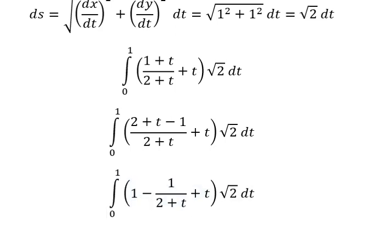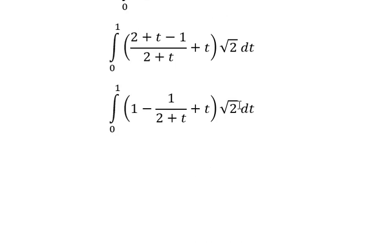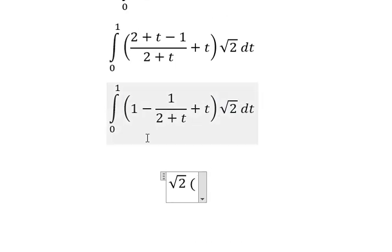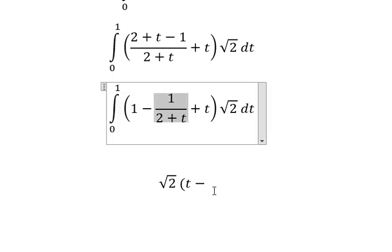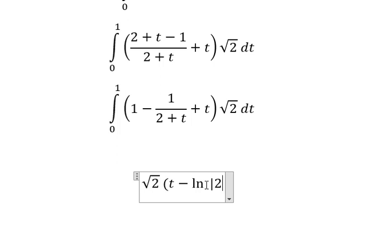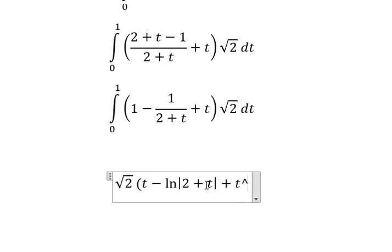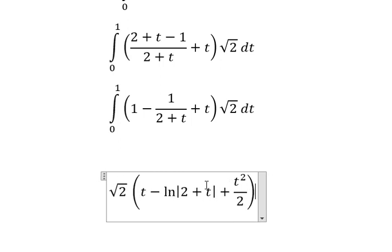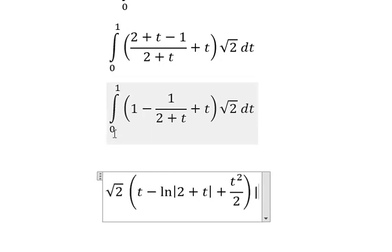Now we have the final answer. The integration of one gives t. The integration of this term gives the natural log of the absolute value of (2 + t), and the next term is t squared over two. We put the bounds from zero to one.